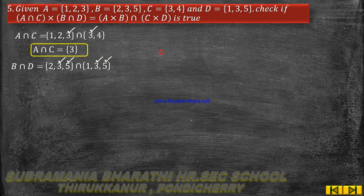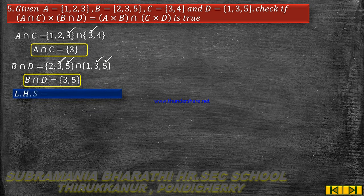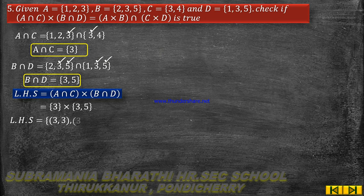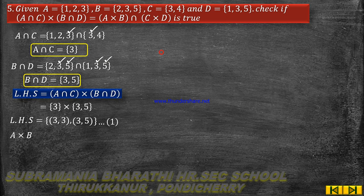B∩D = {3,5}. Now we are going to find the LHS, which is (A∩C) × (B∩D). That equals {3} × {3,5} = {(3,3), (3,5)}. This is equation number 1.